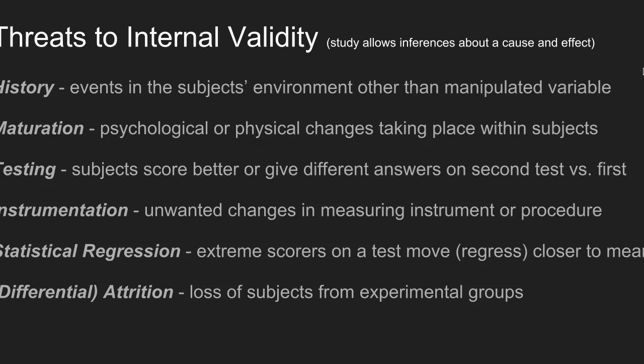Statistical regression refers to a phenomenon where study participants with very extreme scores on a measurement tend to move closer to the mean over time. If study participants as a group have extreme scores — either very high or very low — an observed experimental effect in later measurements might actually be due to statistical regression, or regression to the mean.